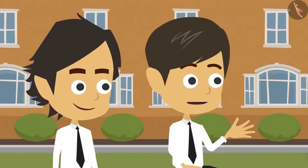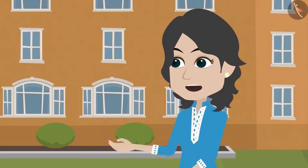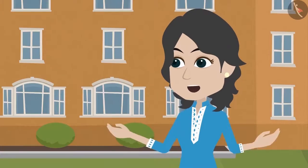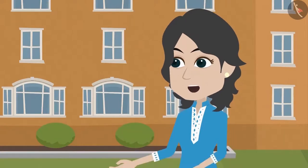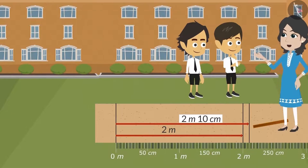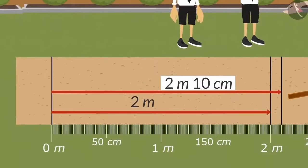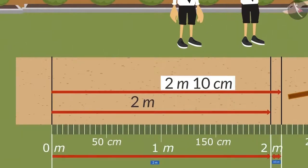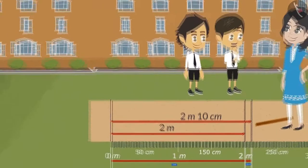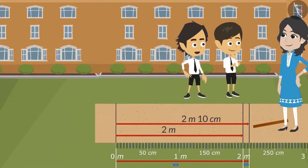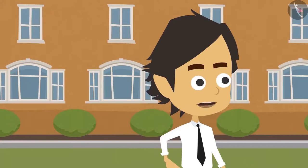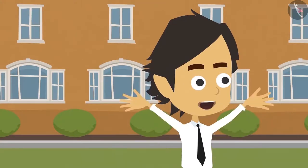I didn't understand, ma'am. Tell me either in meters or in centimeters. Hey Rayyansh, it is not necessary to tell length in just one unit of measurement. We can write it in two units of measurements as well. For instance, your long jump is 2 meters and 10 centimeters. This means that you have jumped a length of 2 meters and 10 centimeters. Okay, now I understand. Rayyansh has jumped just 10 centimeters more, so if I practice a little then I will be able to jump longer.